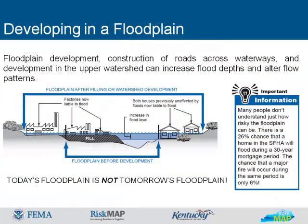Floodplain development, construction of roads across waterways, and development in the upper watershed can increase flood depths and alter flow patterns. Many people don't understand just how risky the floodplain can be. There's a 26% chance that a home in the special flood hazard area will flood during a 30-year mortgage.